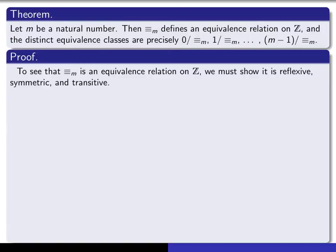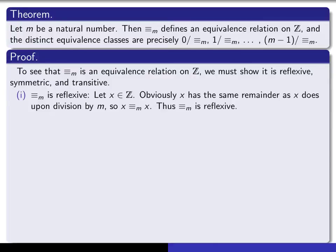To prove all three properties, we make use of the fact that two integers are congruent modulo m if and only if they have the same remainder upon division by m. For reflexivity: given an integer x, obviously x has the same remainder as x does upon division by m. Therefore, by the previous theorem, x is congruent to x modulo m, which proves that the relation is reflexive.